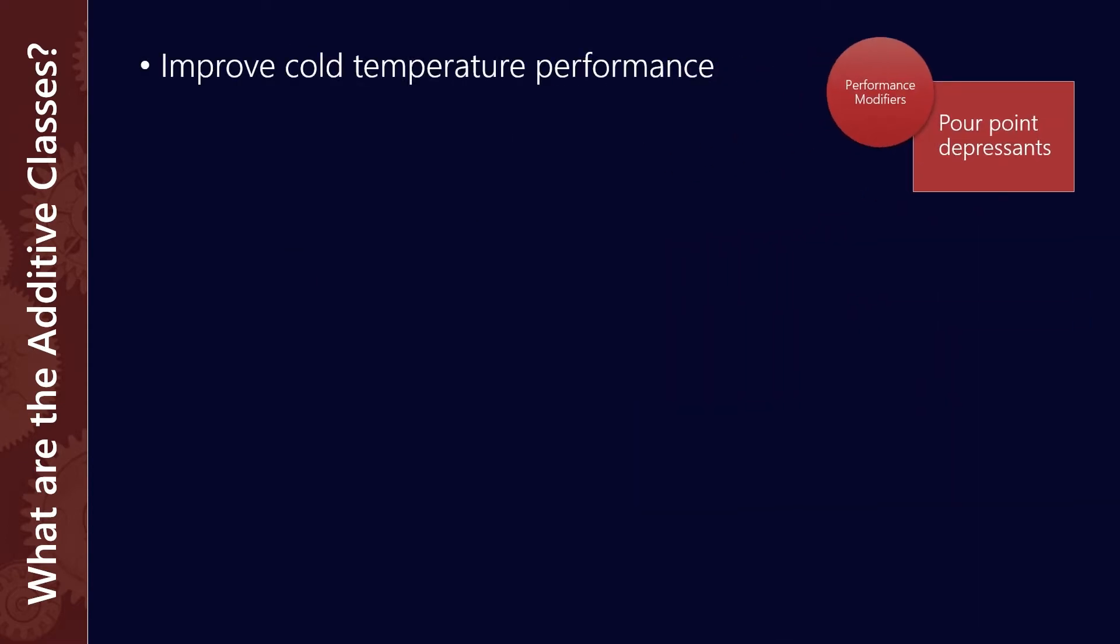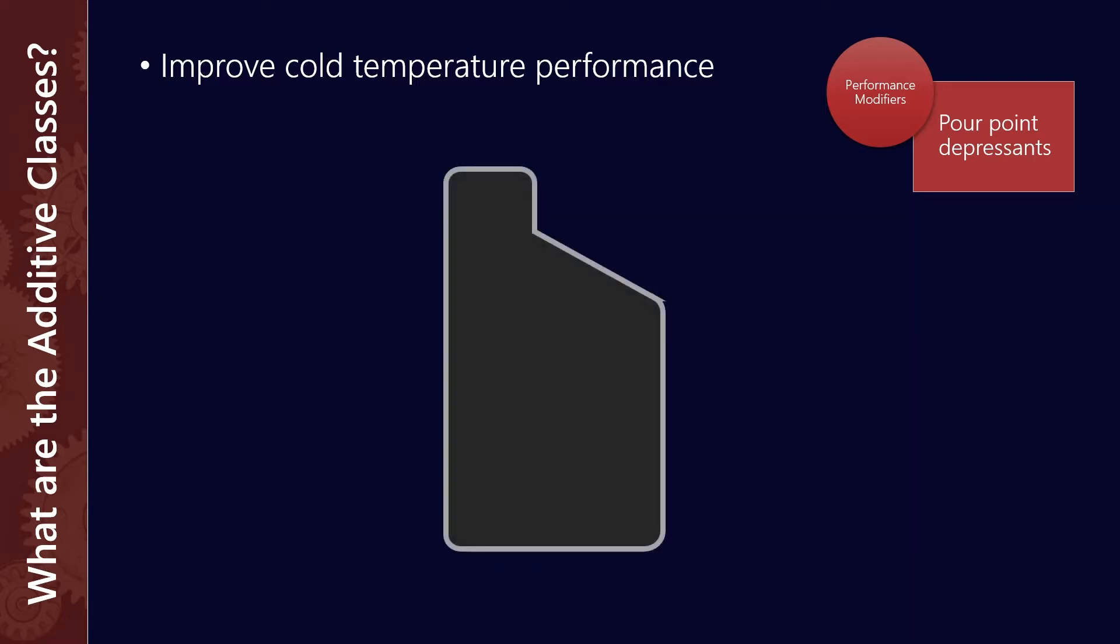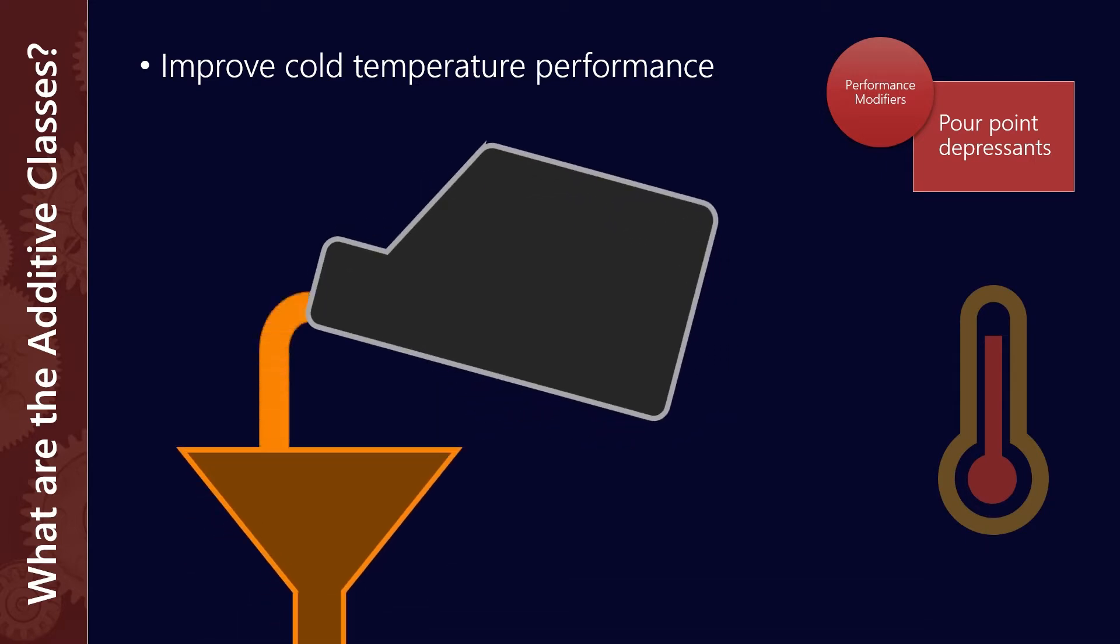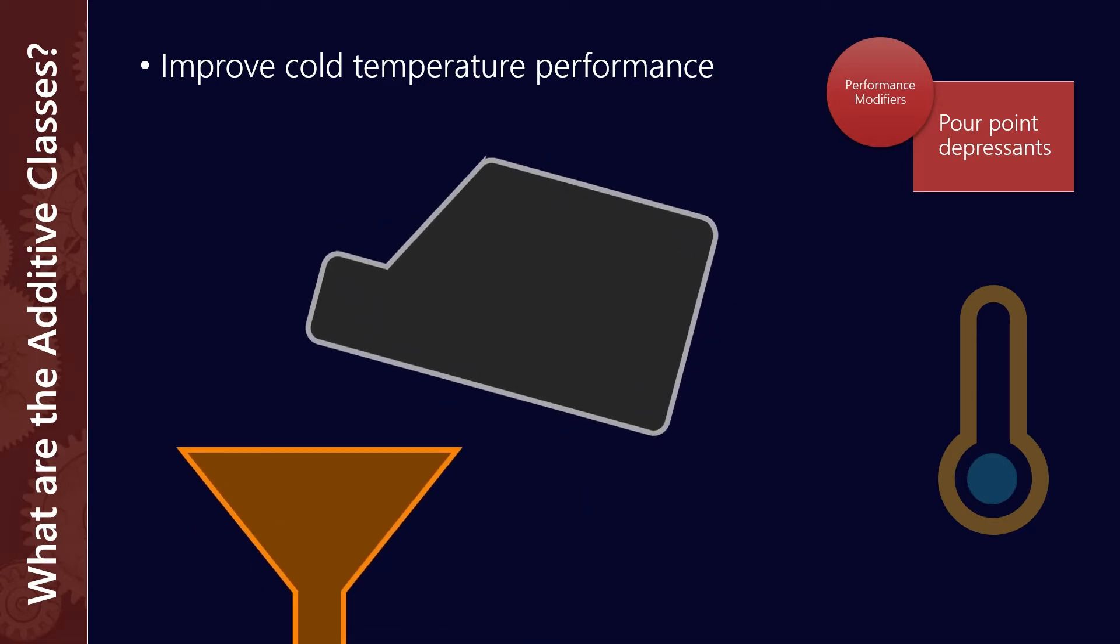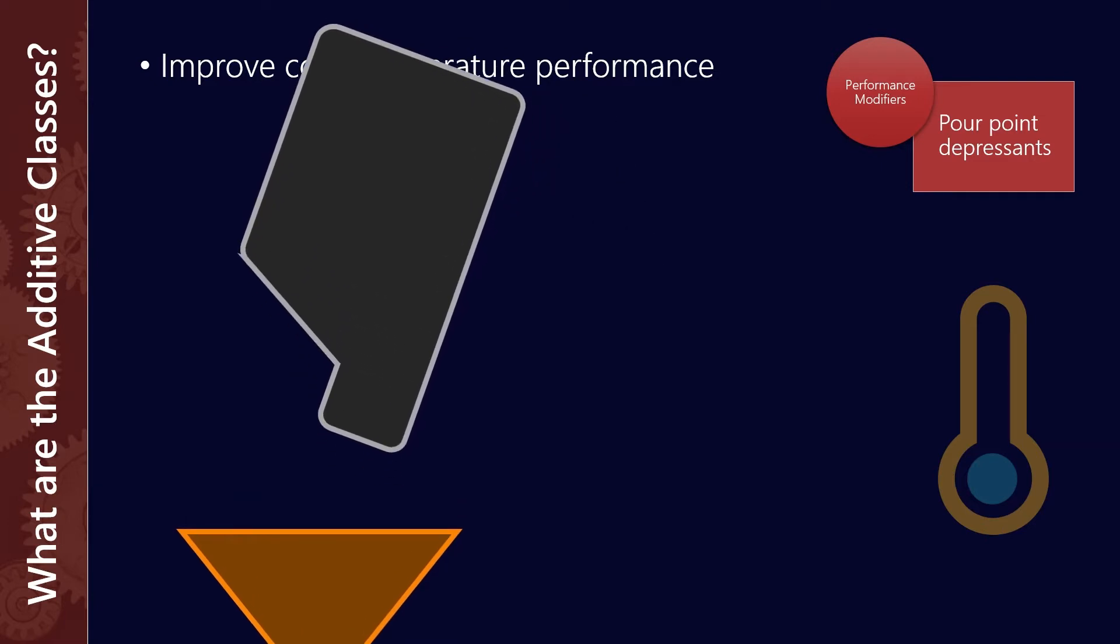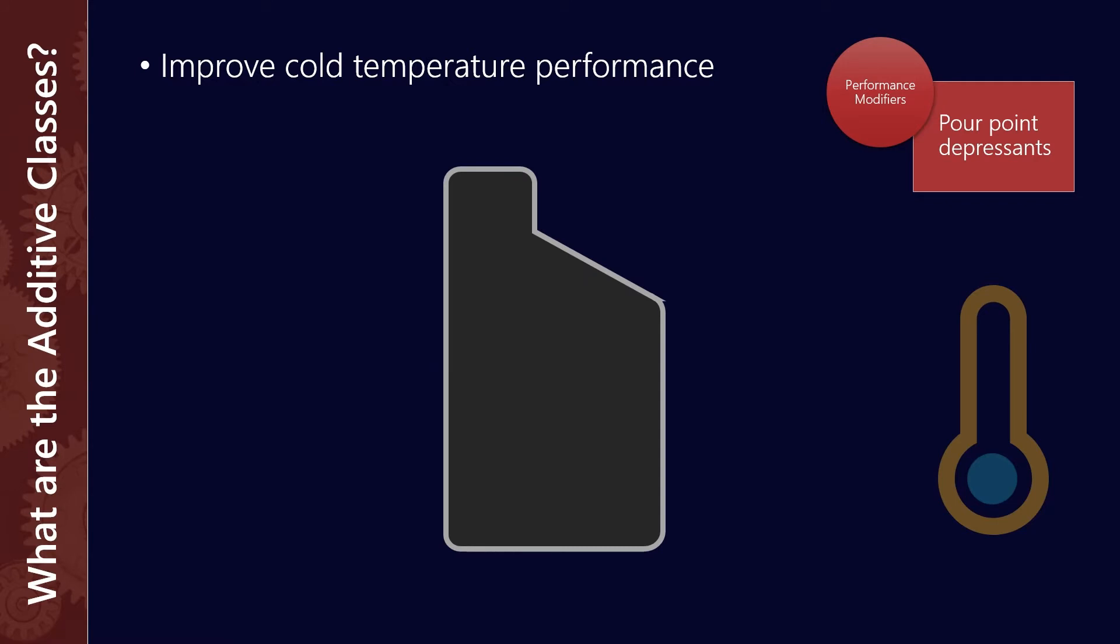Let's start with the performance modifiers, specifically pour point depressants. These improve cold temperature performance. In most mineral lubricants, at normal operating temperatures they operate perfectly fine—they'll pour quite well and act in operation just fine. But if we reduce these down to colder temperatures, maybe freezing or sub-freezing, when we go to pour them out, really nothing happens. That's because there are waxy components to crude oils, and at cold temperatures these solidify or crystallize and affect the pour performance (P-O-U-R) of the lubricant. The way we fix that is through pour point depressants, a special additive class which helps us at low temperatures.